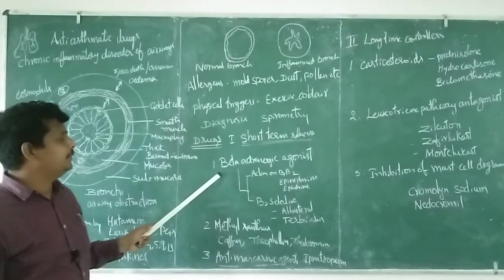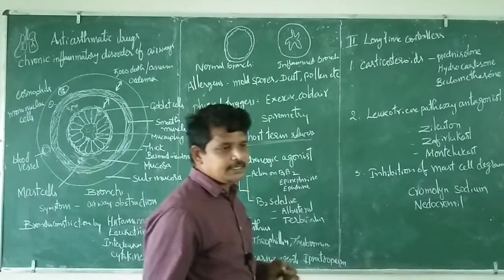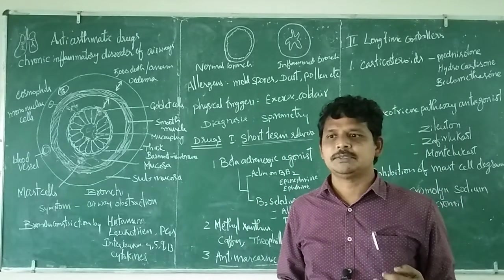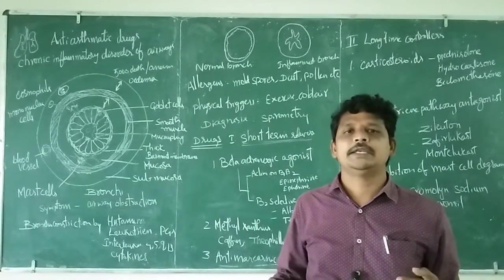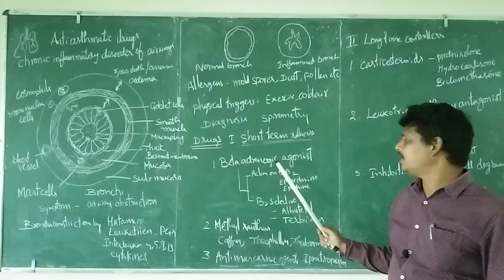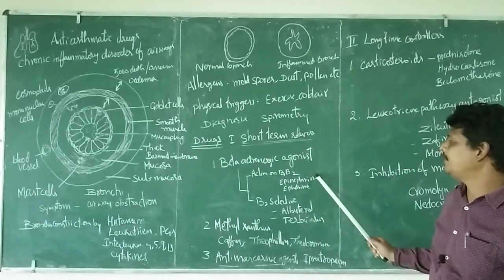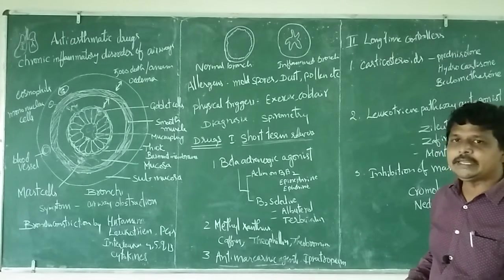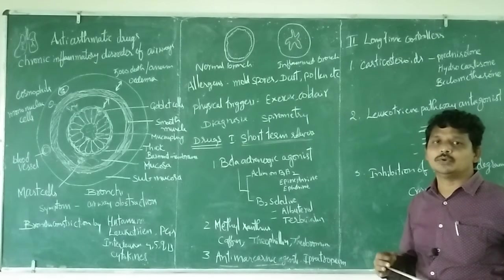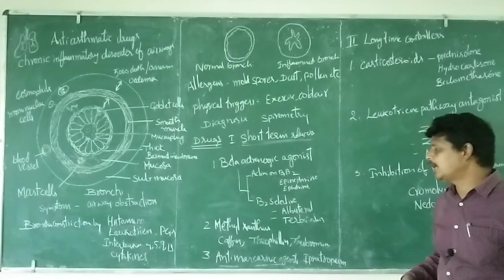Short-term relievers: example, beta-adrenergic agonists. As you know, beta cells are present on the heart and lung. Beta-1 is predominant in heart, beta-2 is predominant in lungs. Beta-adrenergic agonists can be acting on both beta-1 and beta-2, like epinephrine. Beta-2 selective adrenergic agonists: since beta-2 receptors are predominant in lungs, example is albuterol and terbutaline.